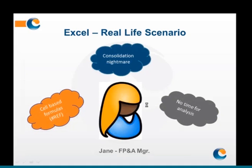Jane is the FP&A manager in the same organization and she reports to the CFO, Joe, who has to present the forecast to the board tomorrow. Jane is struggling to get the final figures together. Each regional manager has sent Jane their spreadsheets, however each has been slightly adapted to cater for their own needs. Jane is struggling with her cell-based formulas and each time she adds additional regions, another formula is thrown out due to additional lines being added to the templates. By the time Jane has consolidated the regional forecast, she is down to the wire with little or no time for analysis and just has to send the final figures on to Joe.